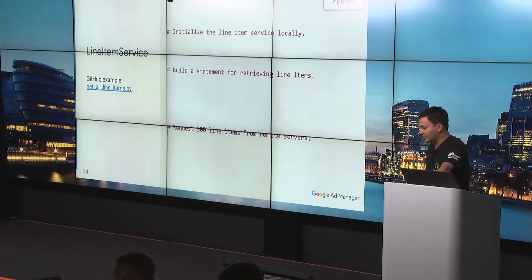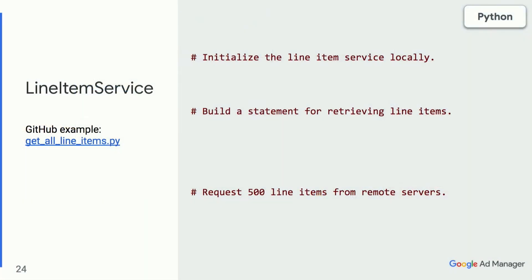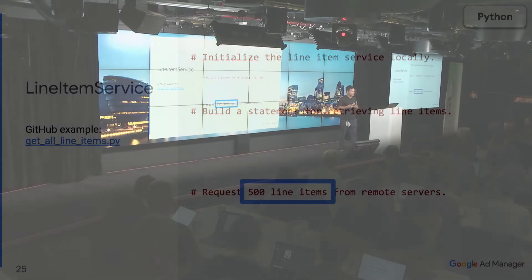Here are the high-level steps for getting line items by statement. These steps are copied directly from the Python example on our GitHub repository. All code examples on these GitHub repositories are also available in other programming languages. I modified the GitHub example slightly to remove the loop and fetch only the first 500 line items — the first page. This is my first tip: consider a page size that is more suitable to the object types you're expecting to get in return. All of our examples use the default page size of 500 explicitly, to demonstrate that developers have control to tweak this number.